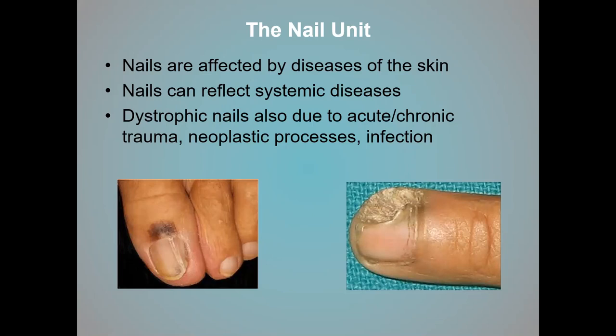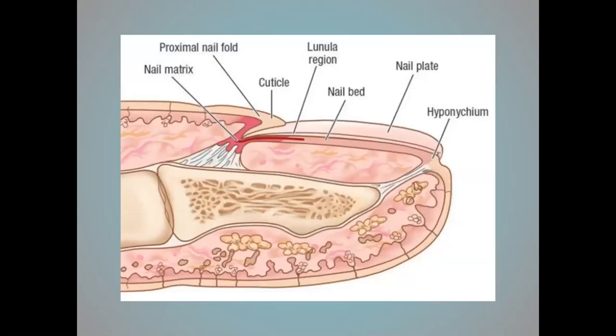The nail unit consists of not just the nail plate — it also consists of the nail bed, the skin below the nail plate; the nail folds, the skin around the nail plate; and the nail matrix, or root, that forms the actual nail plate. Nails are affected by any disease of the skin, since nails are an extension of the skin. But nail problems can also reflect systemic diseases, trauma, infection, or anything acute or chronic to the nail unit itself.